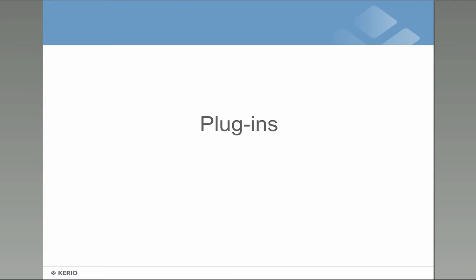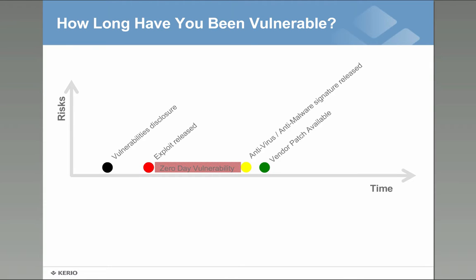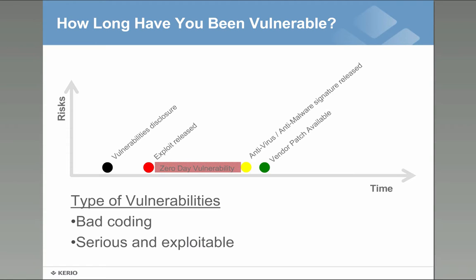The second infection vector is plug-ins. To understand why they're a problem, we need to briefly understand vulnerabilities. Last week we saw there are vulnerabilities, an exploit is released, and there is a time when everyone is exposed until antivirus or anti-malware releases protection, or the vendor releases a patch. More importantly, there are differences in vulnerabilities — some bad-coding vulnerabilities expose some data but aren't too serious. The serious and exploited ones are what Martin will take you through, showing why you are actually vulnerable.